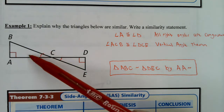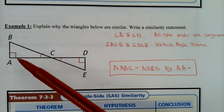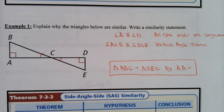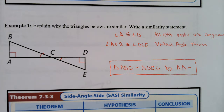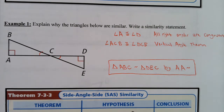The two triangles are similar by angle-angle similarity. That's the first shortcut.